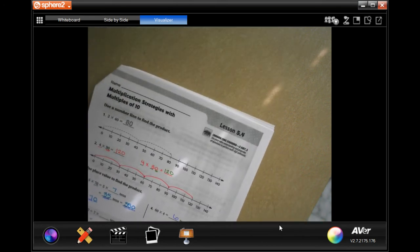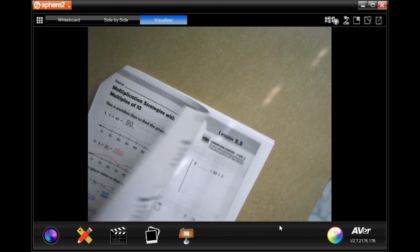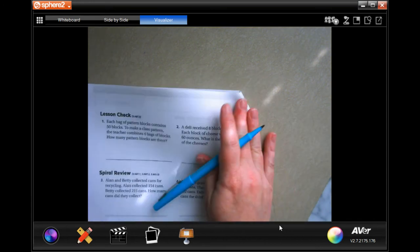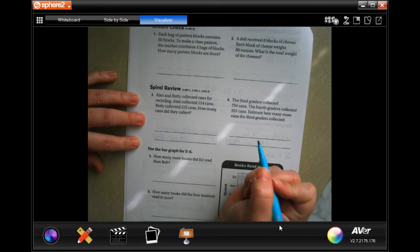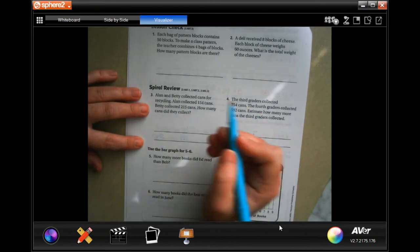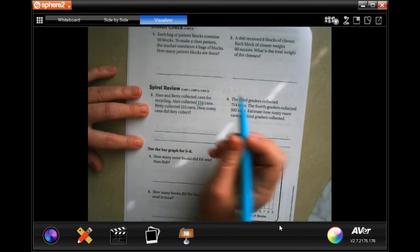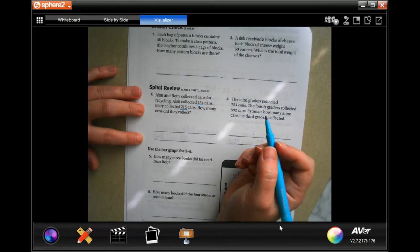Let's go over onto the back, where you guys are going to do the lesson check, just like always. And we're going to do this follow-up. So Alan and Betty collected cans for recycling. Alan collected 154 cans. Betty collected 215 cans. How many cans did they collect?